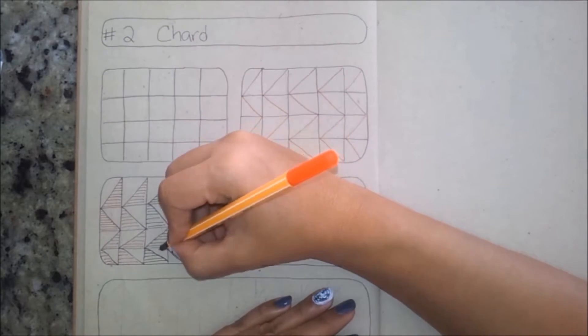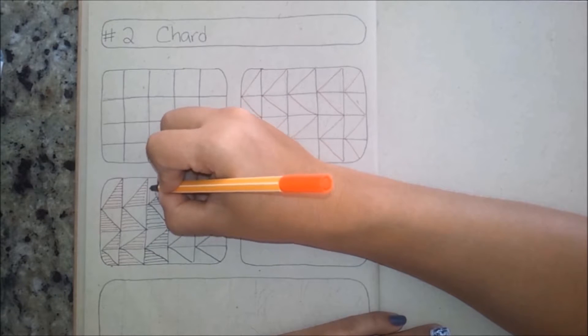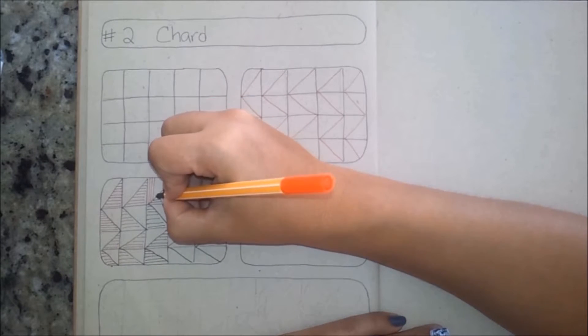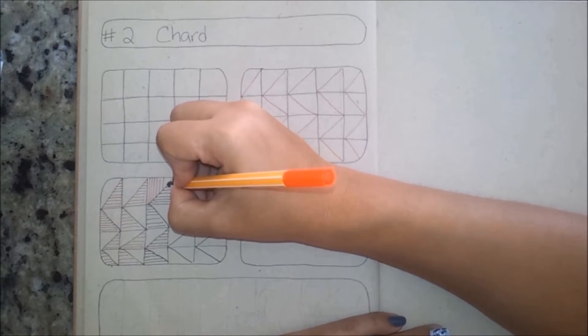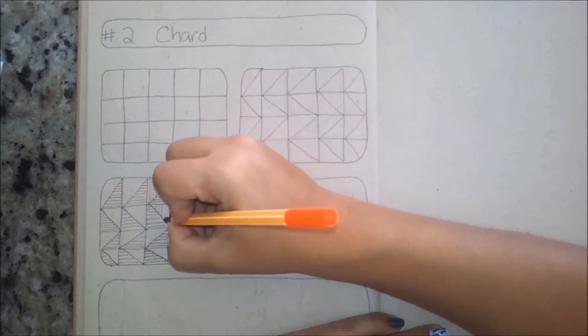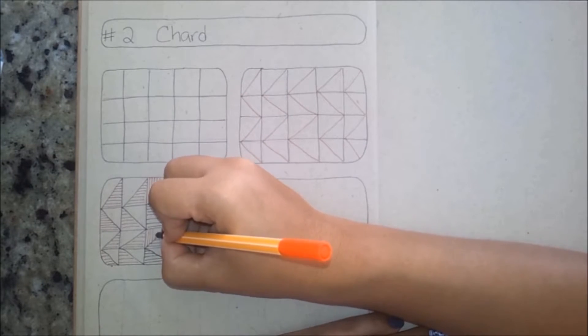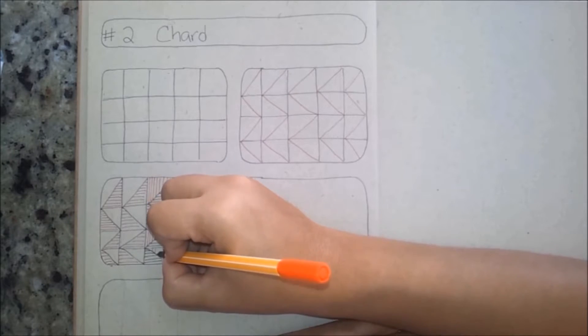Now we're going to fill the upper part of the squares with vertical lines. All the upper parts of the squares, we're just gonna fill them with vertical lines.